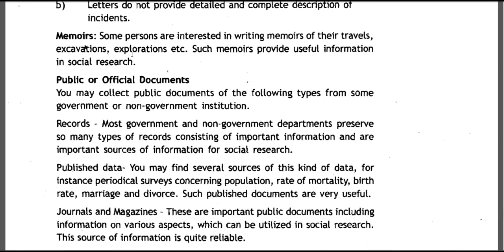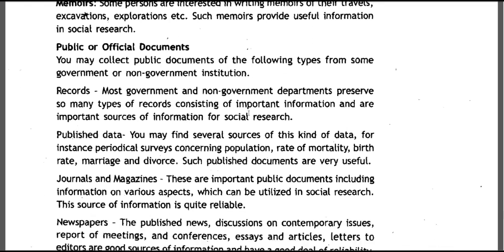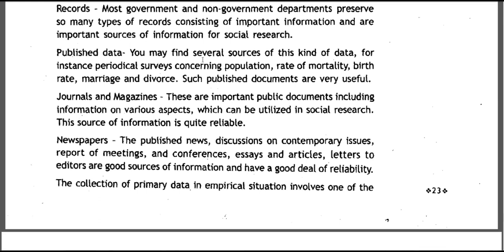Documents such as memoirs provide useful information in social research. Public or Official Documents. You may collect public documents of the following types from government or non-government institutions: (1) Records — most government and non-government departments preserve many types of records consisting of important information and are important sources for social research. (2) Published data — you may find several sources of this kind, for instance periodical surveys concerning population, rate of mortality, birth rate, marriage and divorce — such published documents are very useful.